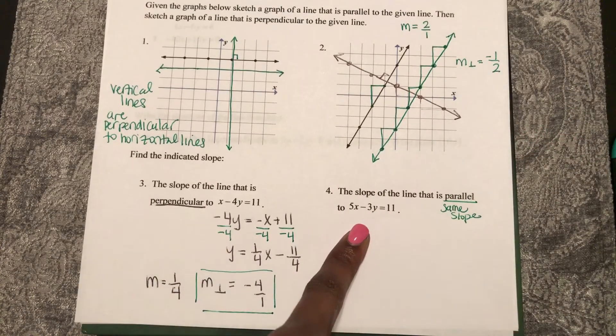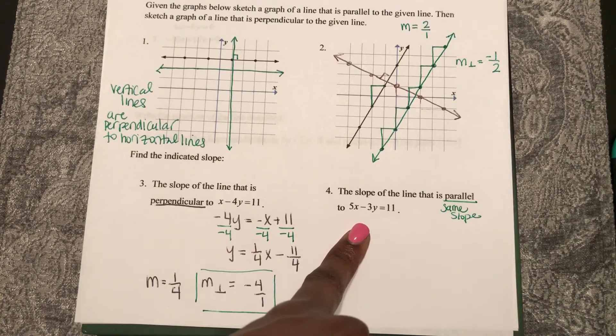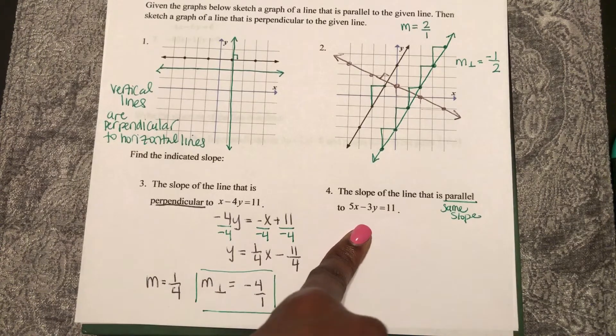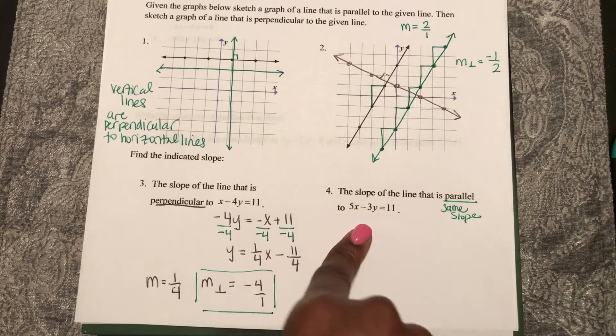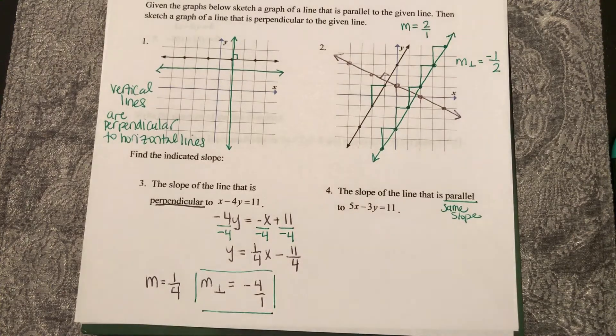So first, I need to convert this equation from standard form to slope-intercept form so I can identify my slope.